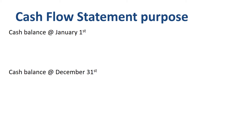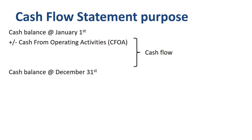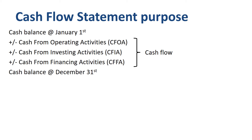The increase or decrease between the January 1st and December 31st cash balance is called cash flow. It consists of three categories: cash from operating activities, cash from investing activities, and cash from financing activities, or terms with slight variations on that wording.